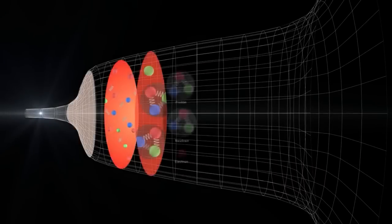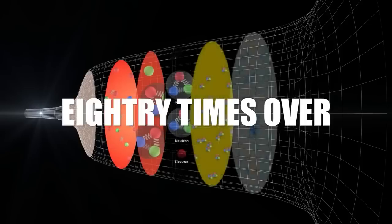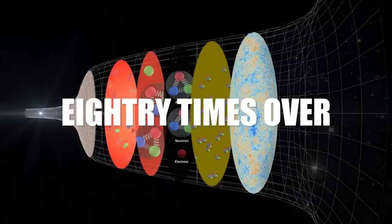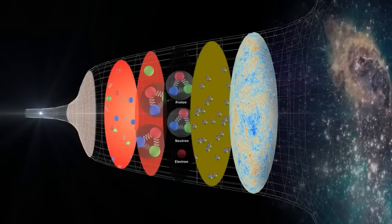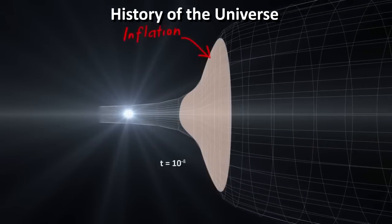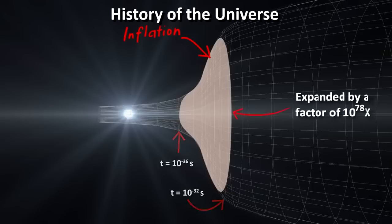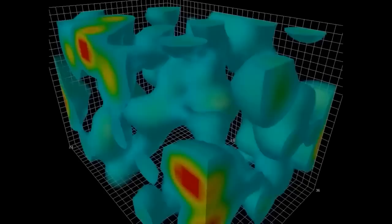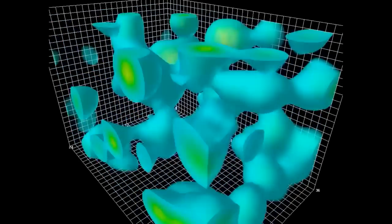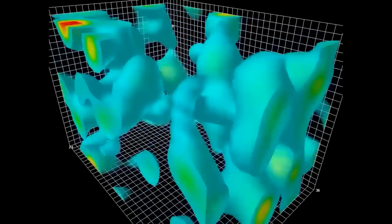Imagine this, the universe doubled in size, not just once, but at least 80 times over, all within a time frame so minuscule it makes a blink seem eternal. This process, often referred to as cosmic inflation, suggests that the universe inflated faster than the speed of light. As for the mechanism behind this massive expansion, scientists are considering fields of exotic energy and even quantum fluctuations as potential catalysts.